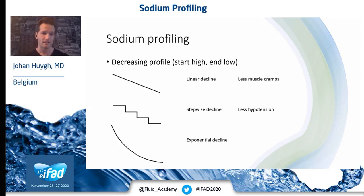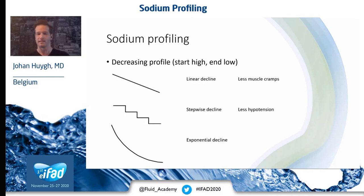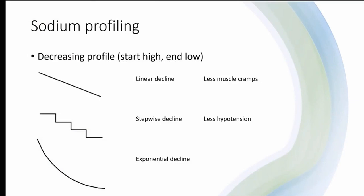Decreasing profiles have three main subtypes: linear decline, stepwise decline, and exponential decline. Linear decline should result in fewer muscle cramps, and stepwise decline in less hypotension, but these are small studies and not rigorously tested. It has been studied in various age groups and has been advantageous in both young adults and geriatric patients, but not in children, where studies show higher interdialytic weight gain and higher pre-dialysis sodium and blood pressure.